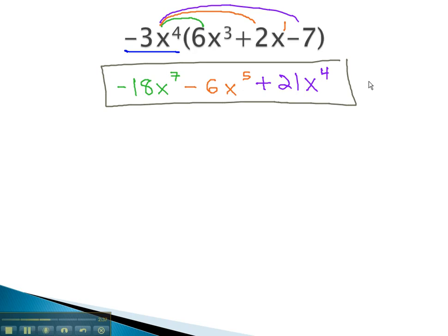To multiply a monomial times a polynomial, we simply have to distribute that monomial through the parentheses and use our exponent properties.